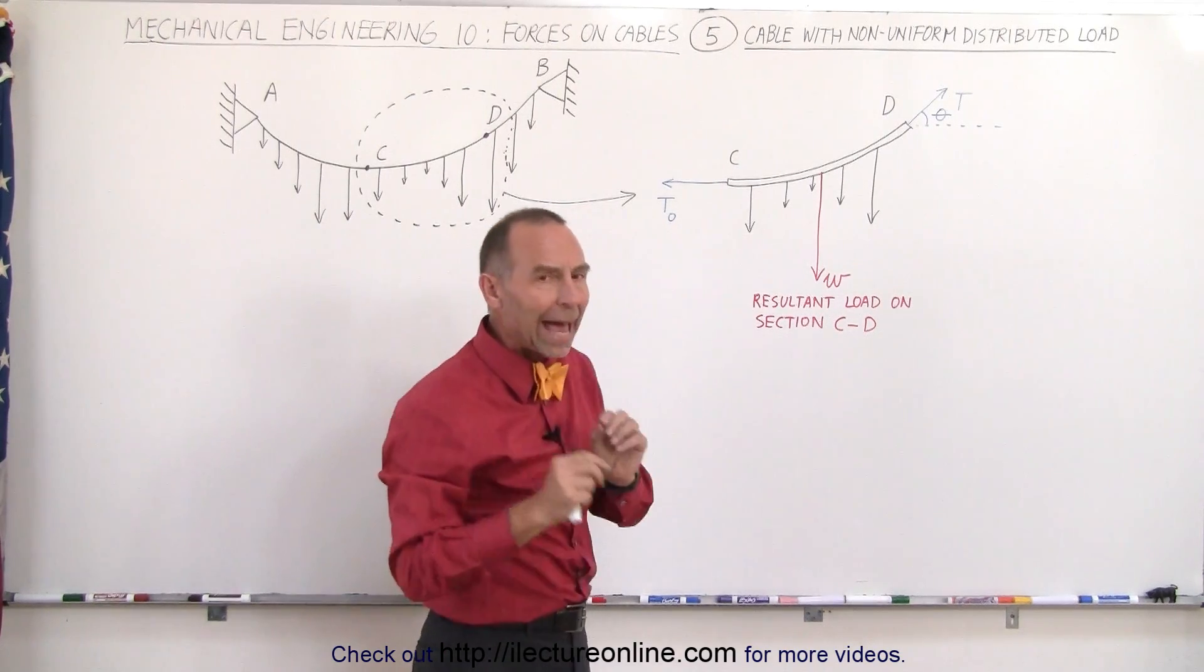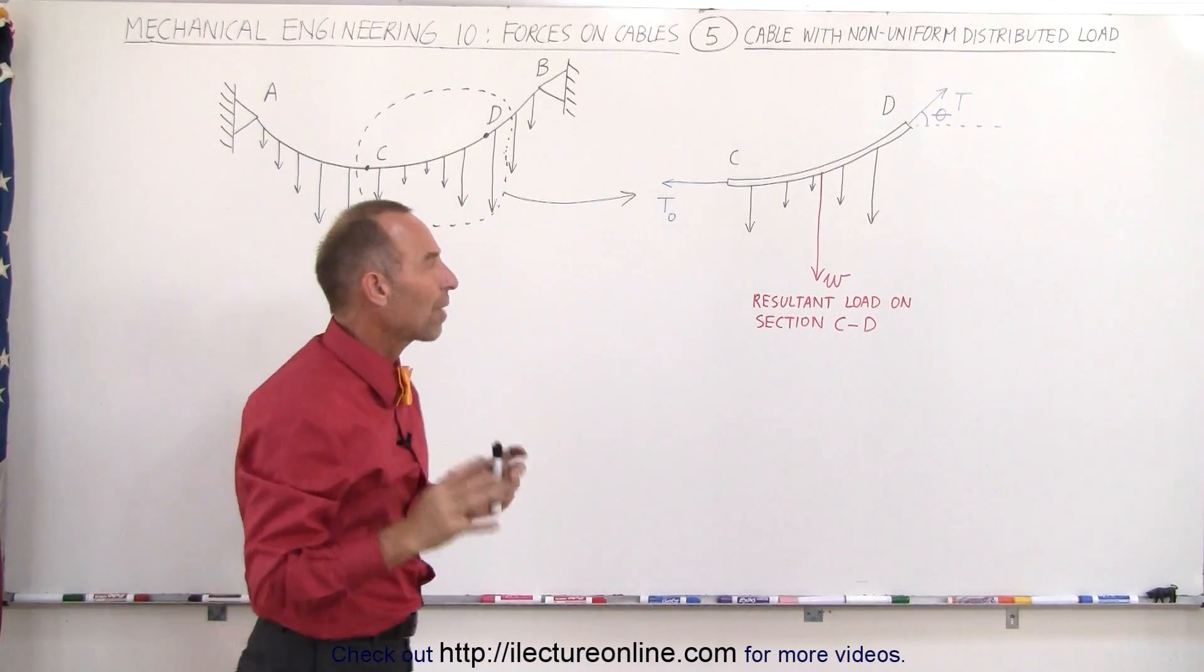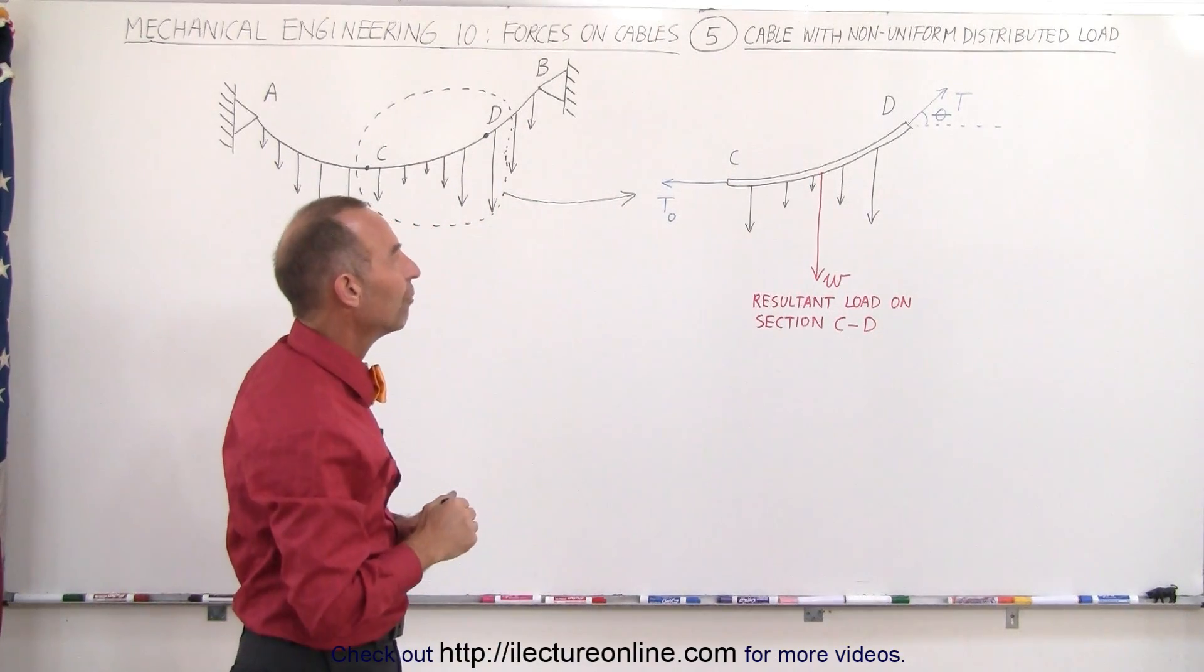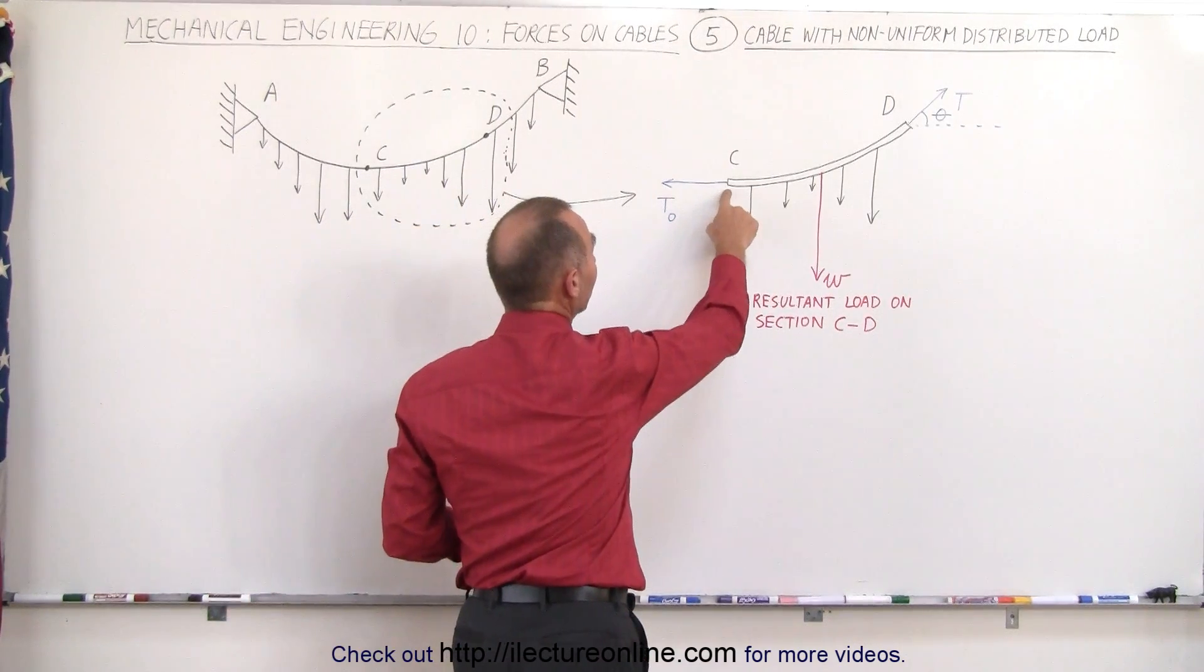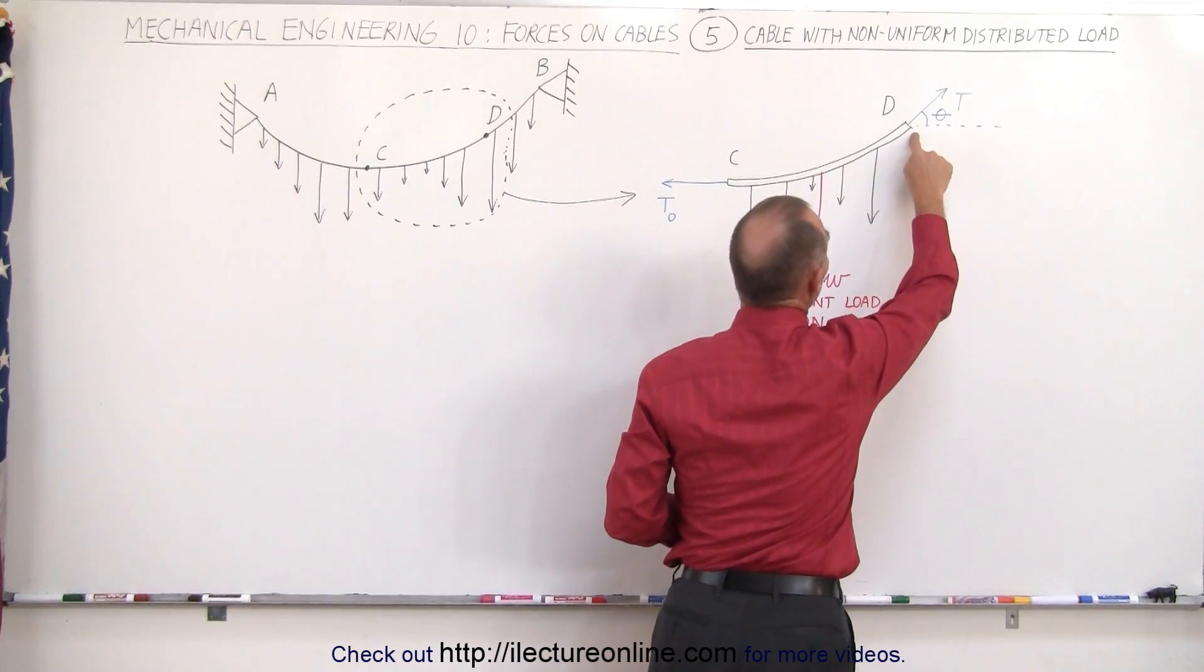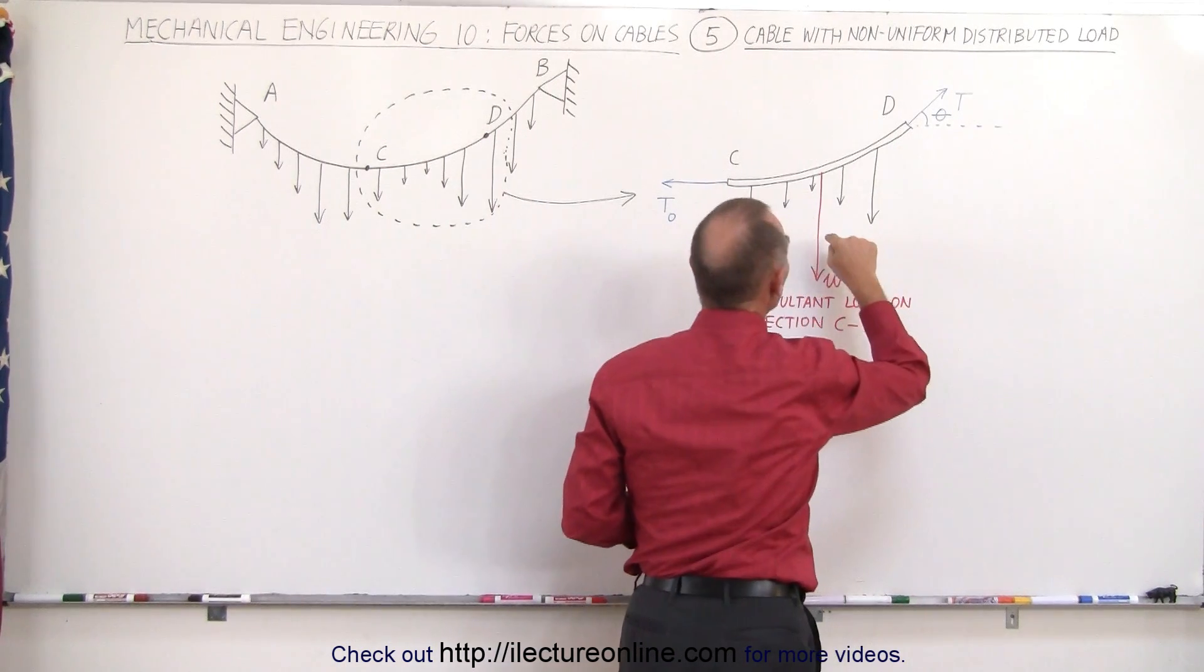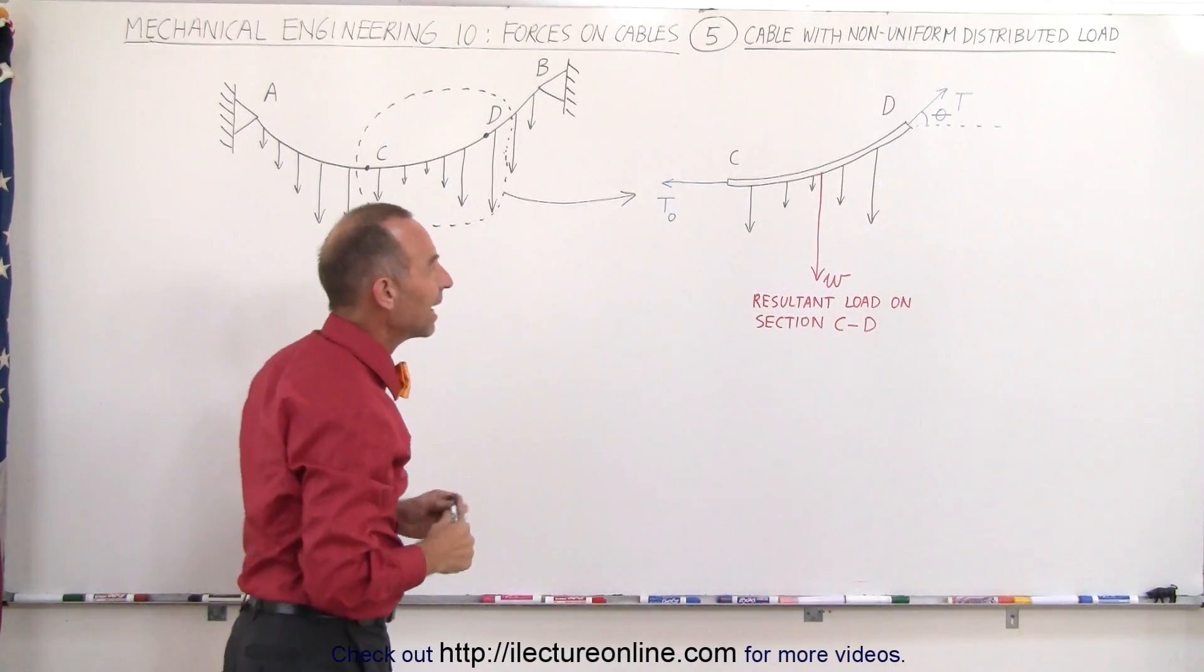The best way to analyze the forces on a section of cable like that is to draw a triangle of the three forces involved. What are the three forces? We have T sub zero at the lowest point on the cable, we have T, the tension at any other point on the cable D, and then we have the resultant load on the cable section between C and D.